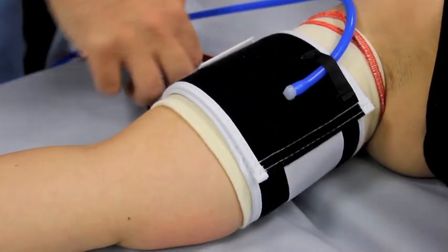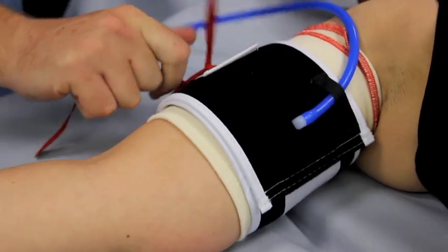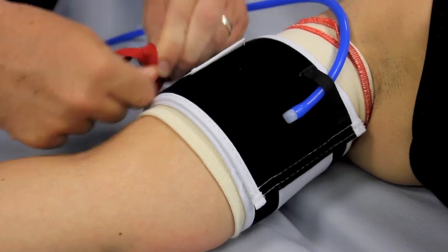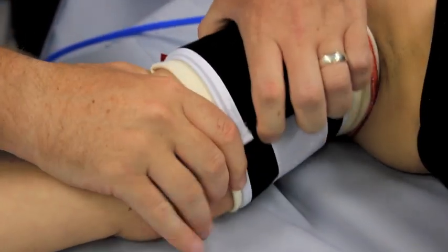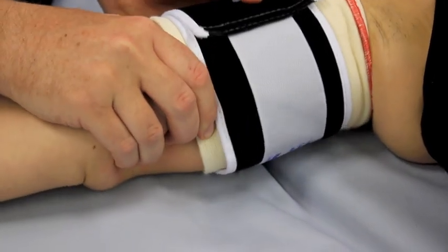In this video, a straight arm cuff is used, however, the conical cuff is designed to fit optimally on patients, particularly those with muscular or pear-shaped thighs.